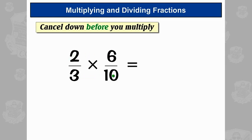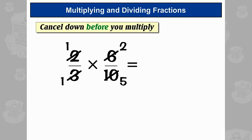Here, 2 and 10 are both even numbers — they both divide by 2. So 2 divided by 2 is 1, and 10 divided by 2 is 5. And then we've got 3 and 6; they both divide by 3. So 3 divided by 3 is 1, and 6 divided by 3 is 2. Now we can times our tops and our bottoms: 1 times 2 is 2, and 1 times 5 is 5 — two-fifths.